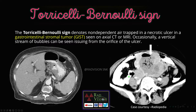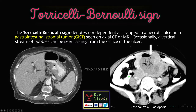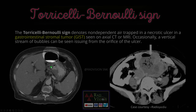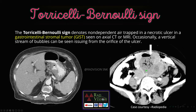Next, the Torricelli-Bernoulli sign denotes non-dependent air trapped in the necrotic ulcer in GIST. This is the non-dependent air trapped in a necrotic ulcer, and here also you can see non-dependent air along with necrotic foci noted in the ulcer in case of GIST. Remember the Torricelli-Bernoulli sign in case of necrotic ulcers in GIST.